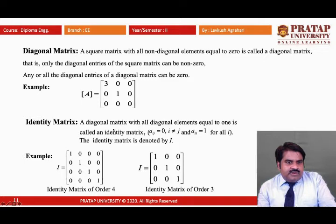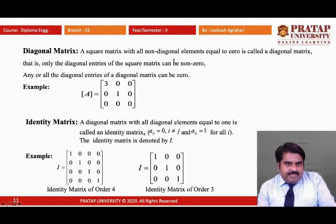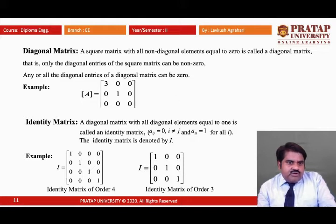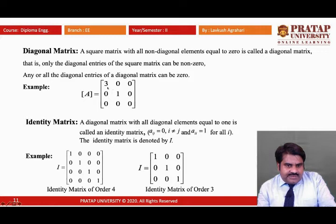Now, the diagonal matrix. If a square matrix has all non-diagonal elements equal to zero — non-diagonal meaning elements not on the principal diagonal — then it is called a diagonal matrix. Only the diagonal elements can be non-zero; however, all diagonal elements of a diagonal matrix can also be zero. An example is given.